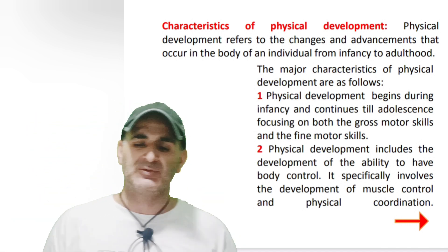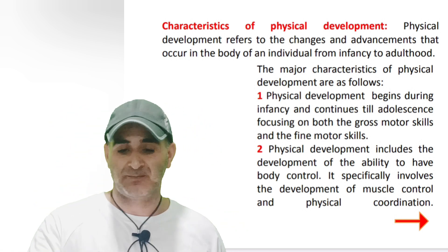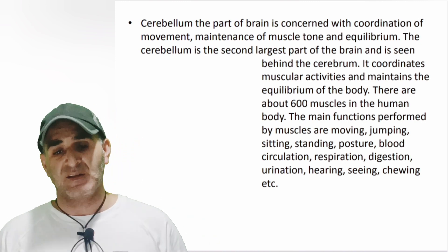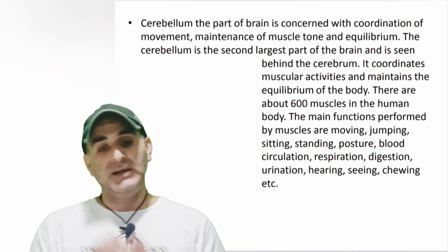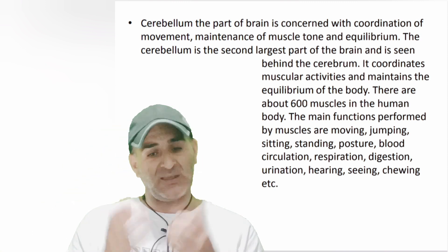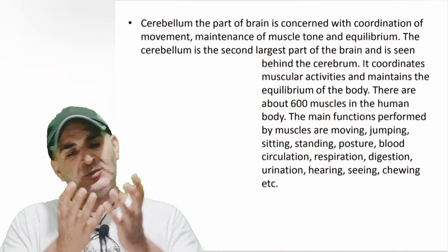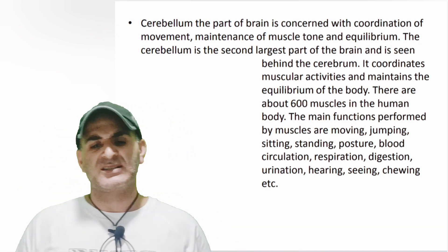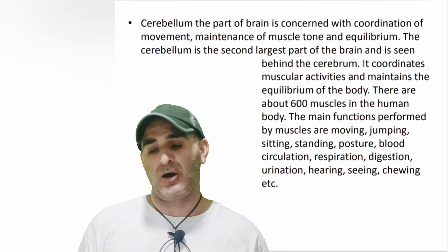Physical development specifically involves the development of muscle control and physical coordination. The cerebellum, a part of the brain, is concerned with coordination of movement, maintenance of muscle tone and equilibrium. The cerebellum is the second largest part of the brain and is located behind the cerebrum. It coordinates muscular activities and maintains the equilibrium of the body.